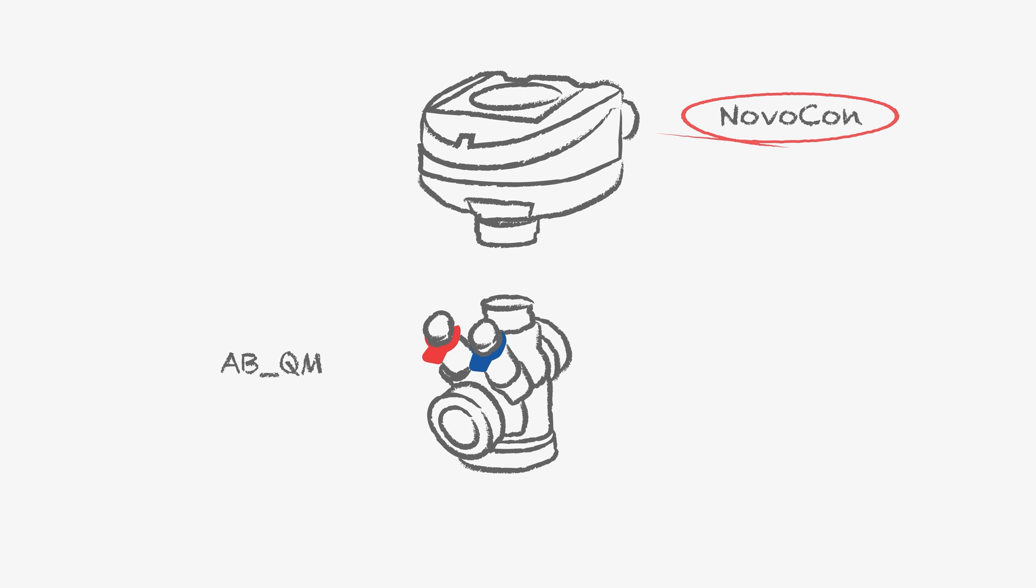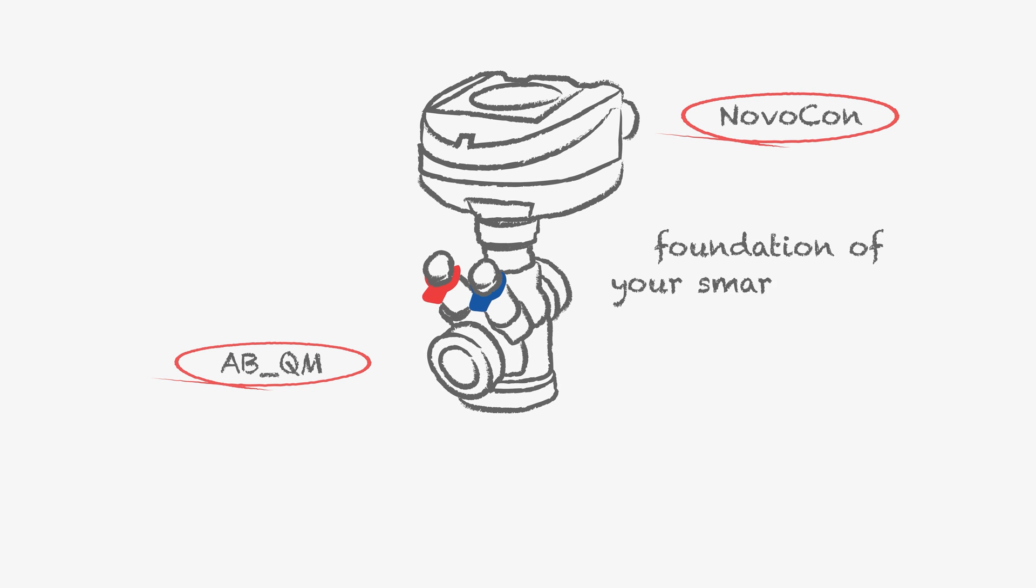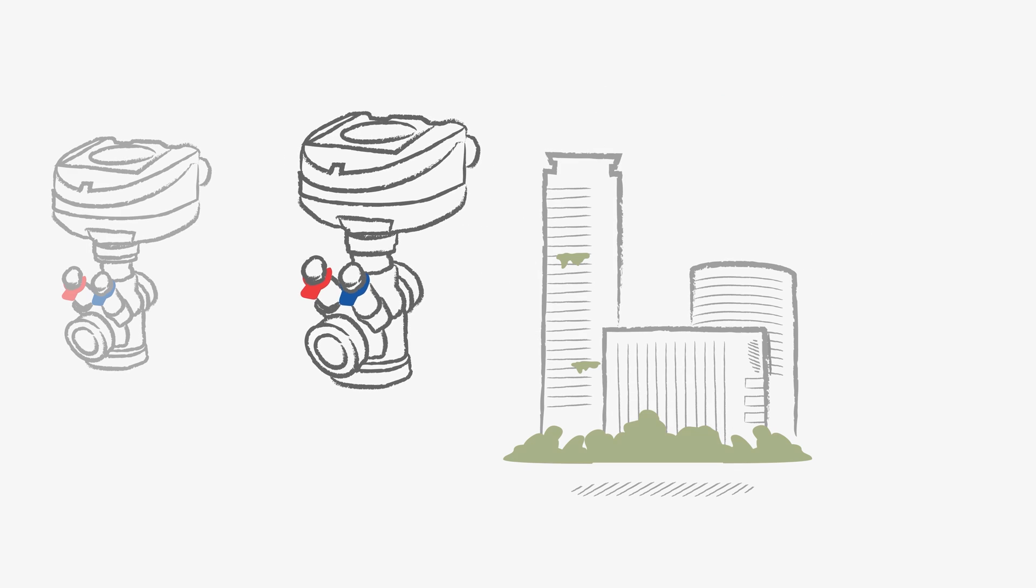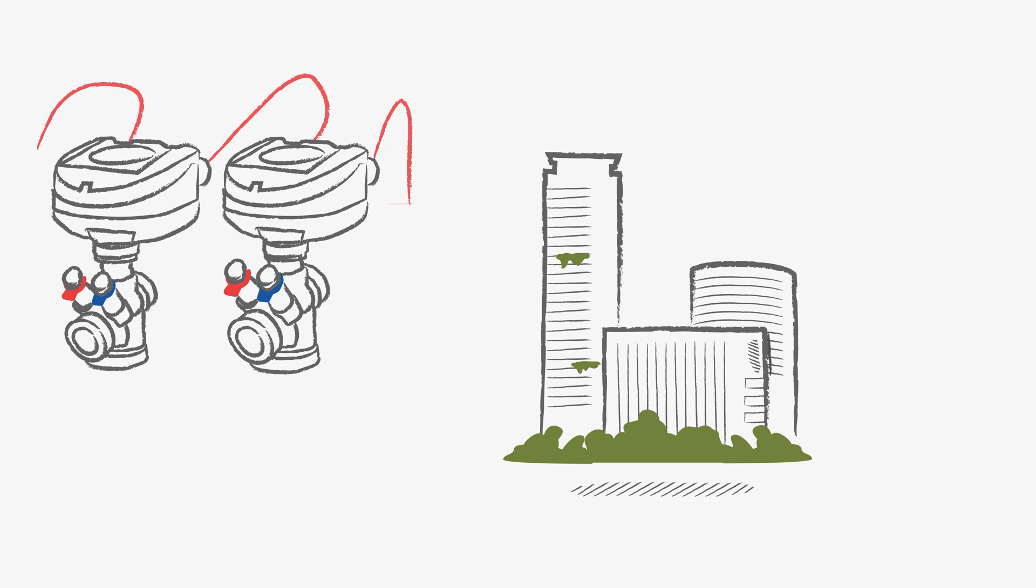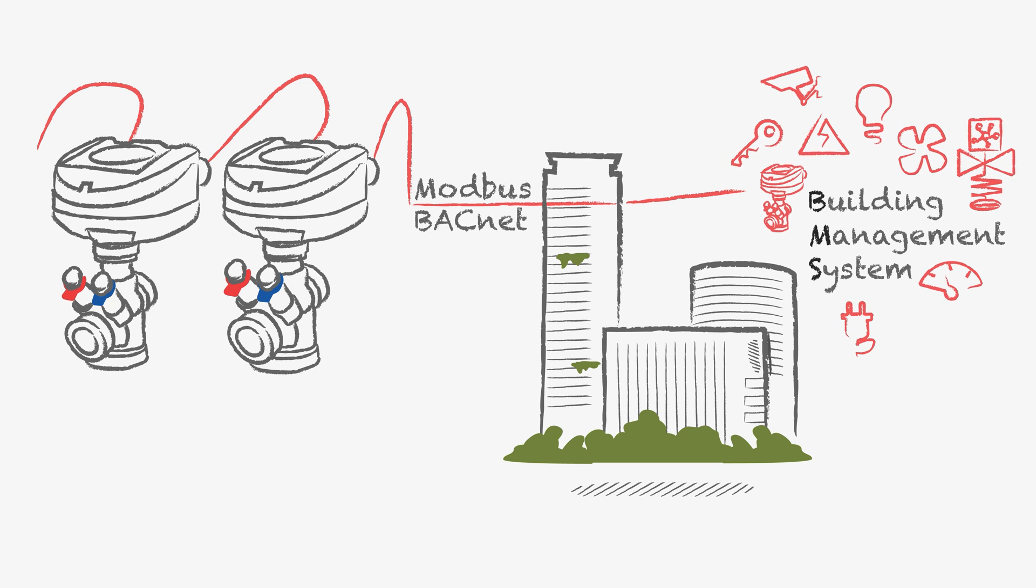Together with the ABQM valves, they form the foundation of your smart hydronic HVAC system. Novocon Digital IoT Actuators use Modbus or BACnet to communicate and that is why they can easily be integrated in a BMS.